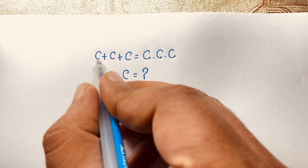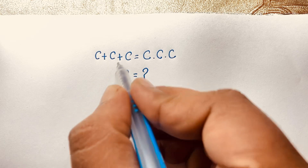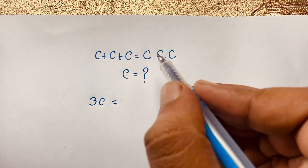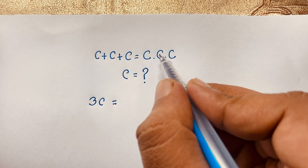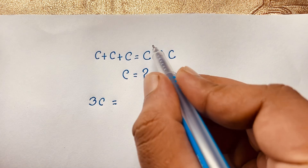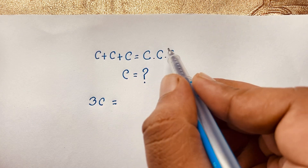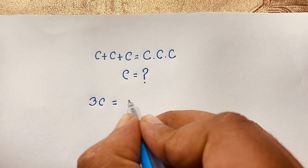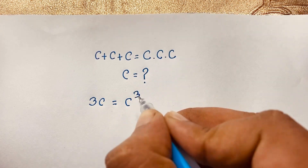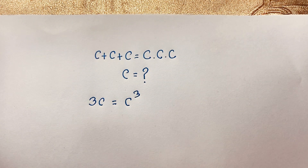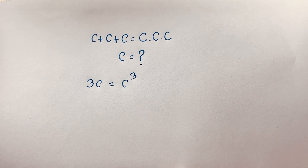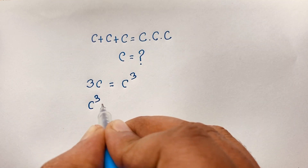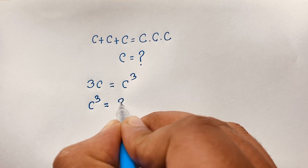First of all, you can see that C plus C plus C, it will be 3C, is equal to C times C times C, which gives us C to the power 3. So you can see this expression: C to the power 3 is equal to 3C.